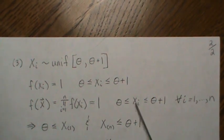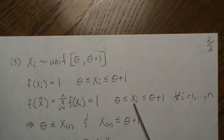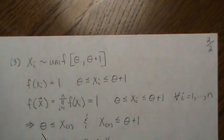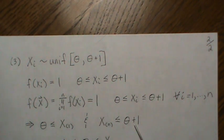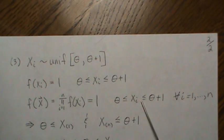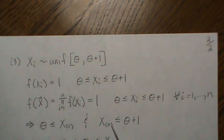Now what this says is that the smallest value must be greater than theta, and the largest value, largest data point, must be less than or equal to theta plus one. They all have to be between here.